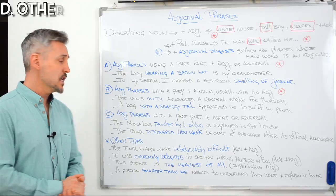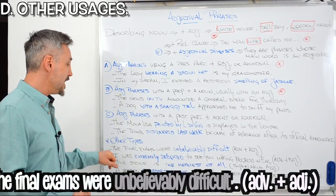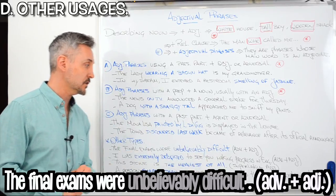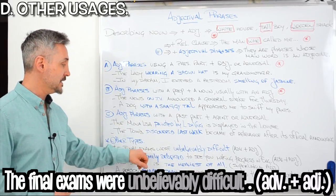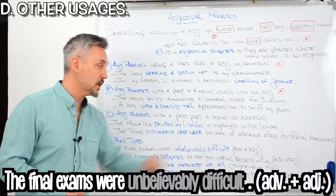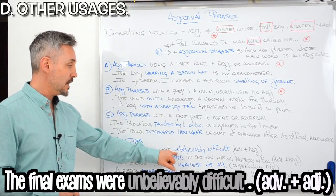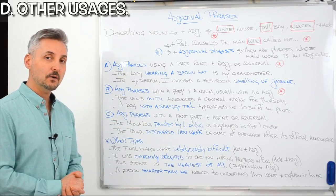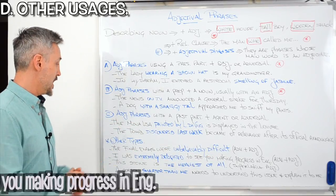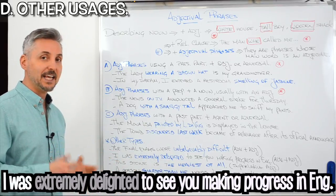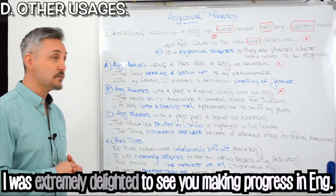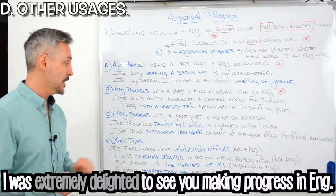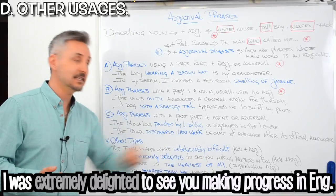Now we have other types also. For example: The final exams were unbelievably difficult. So, we have an adverb — unbelievably — and then an adjective. Let's take a look at another example: I was extremely delighted to see you making progress in English. So, extremely here is the adverb, and delighted is the adjective.